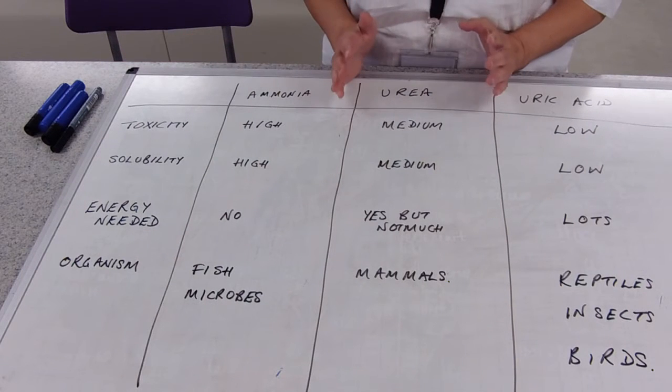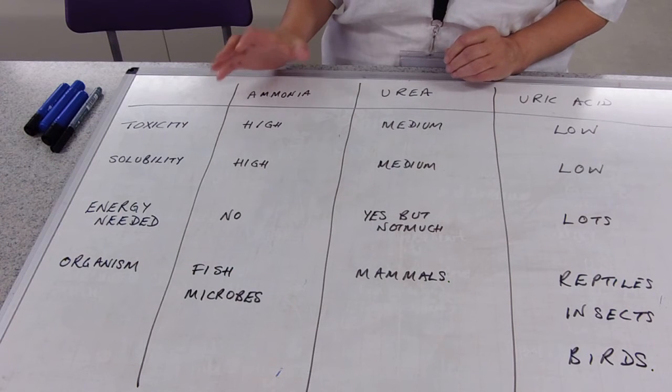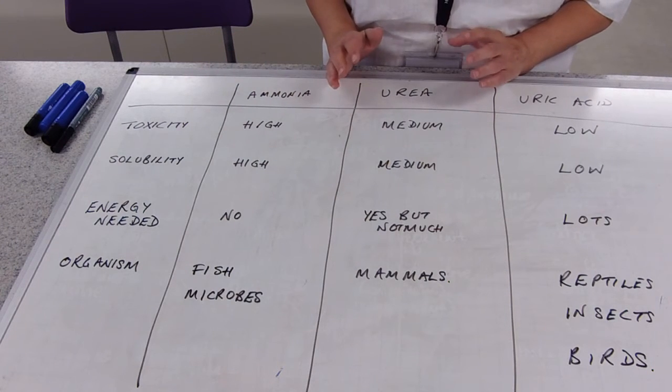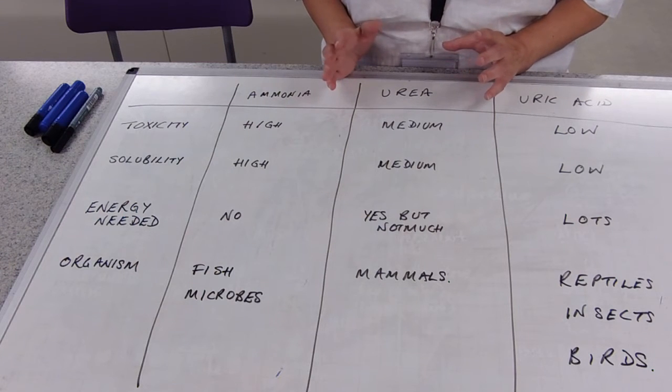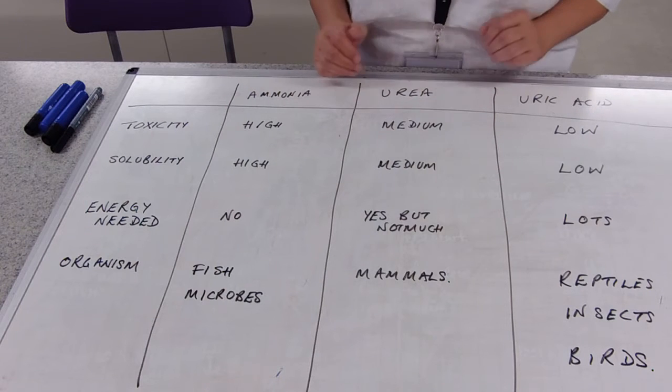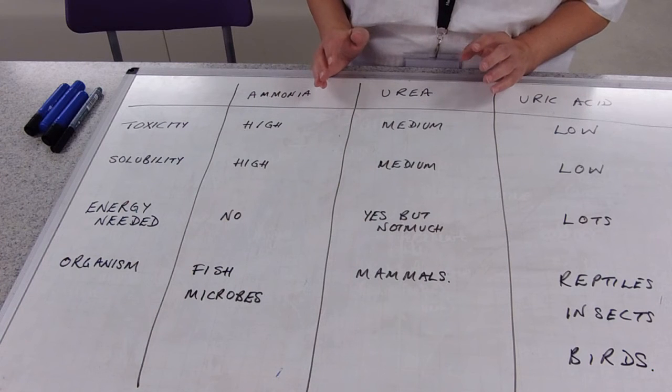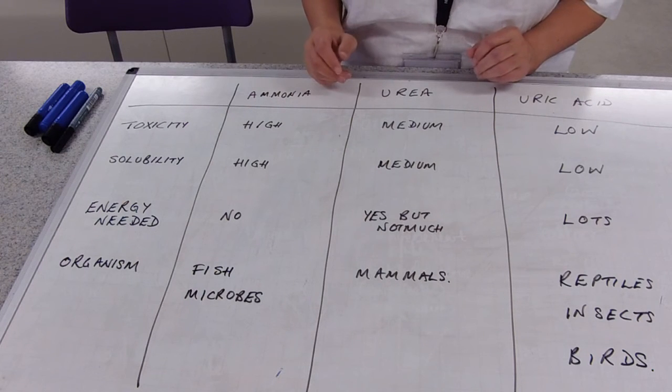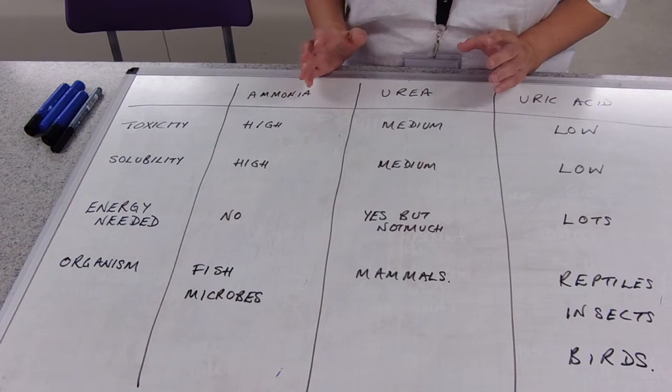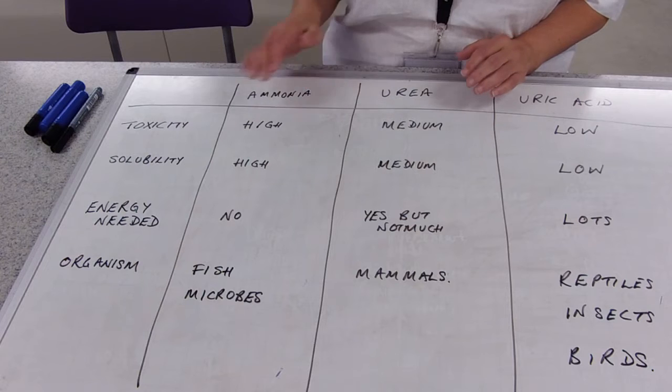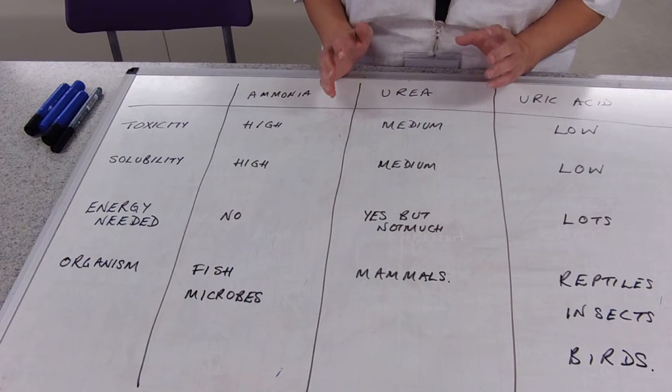In mammals, we're converting that really toxic ammonia from the deamination into urea. So effectively, you're taking the ammonia and you're adding carbon dioxide to it. So double whammy there, get rid of two nice excretory products. It does take a bit of energy. So you're using an ATP to make that. So there is a little energy cost there. But the huge advantage for mammals is that it lowers the toxicity of the ammonia by converting it into urea, makes it less toxic.